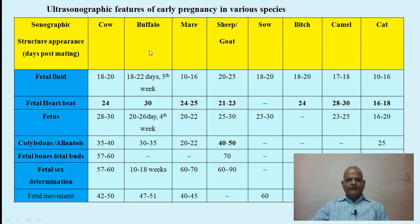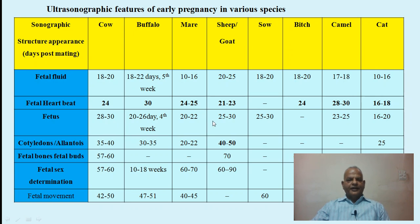Here are some ultrasonographic features for early pregnancy diagnosis in various species. Ultrasound is especially helpful for pregnancy diagnosis in sheep and goats. The fetal heartbeat first appears at 21 to 23 days using a transrectal linear array probe; cotyledons can first be visualized at 40 to 50 days using a sector transabdominal probe. Except in the mare, fetal heartbeats appear at around 24 to 28 days. Ultrasound is particularly useful in the bitch and cat, where no other means can directly visualize pregnancy.